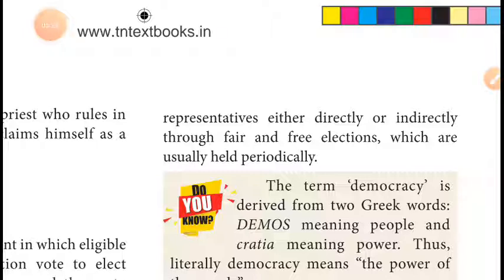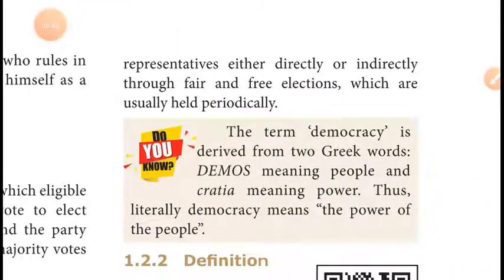Before going to the definition, here is an important piece of information: the term 'democracy' is derived from two Greek words. 'Demos' means people and 'kratia' means power. These two words joined together give us 'democracy' — the power of the people. Note that 'republic' is derived from a Latin word, but 'democracy' comes from these two Greek words.